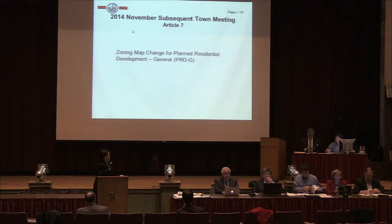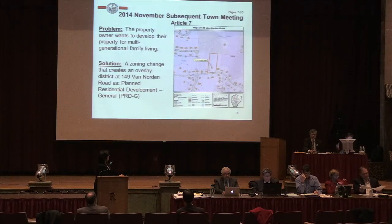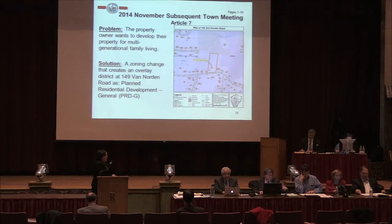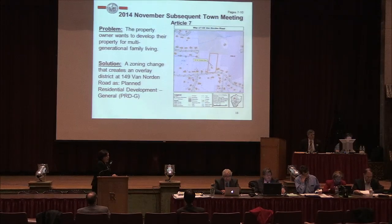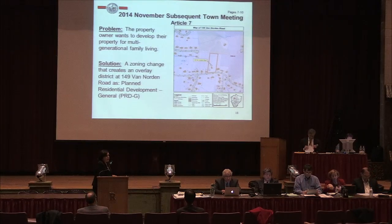Article 7 is a proposed map change for a planned residential development — a PRD-G. The property owner approached us some time ago and had an issue with a piece of property they would like to develop. One of the proposals was to pursue this development through a zone change, which is what's before you tonight — a planned residential development, or PRD-G.